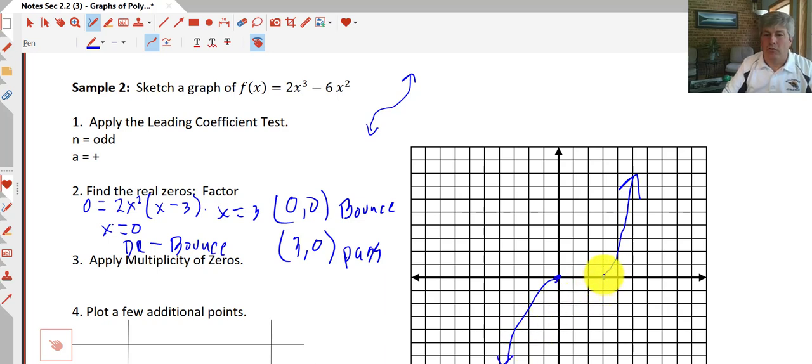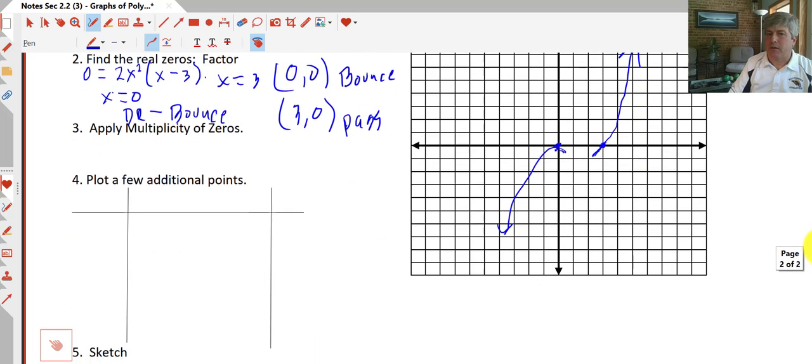We also know, since 3 is a pass-through, our graph is going to end up in the negative, and for values of 1 and 2, we're going to get negative outputs. We're going to be down here somewhere. We're not really sure what that looks like, but we know it's going to be down there, and it's going to come back here, and it's going to bounce off of that origin.